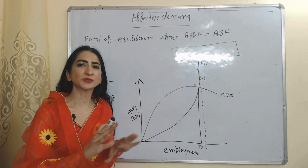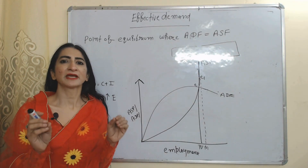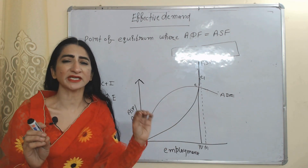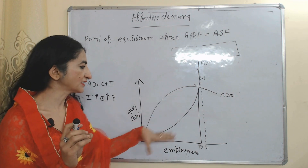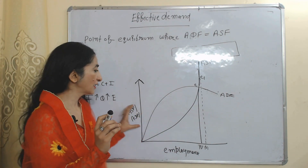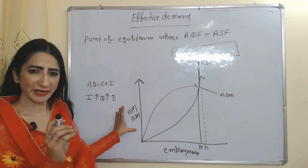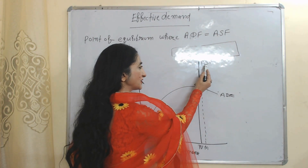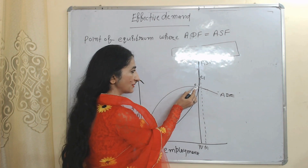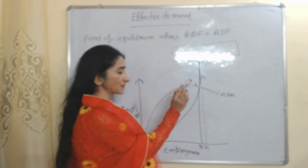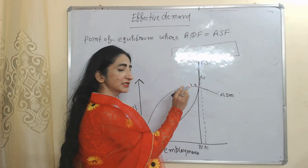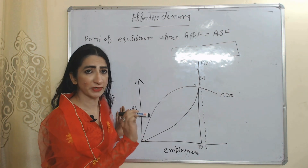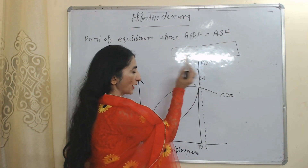The entire theory depends on effective demand, and effective demand is the point of equilibrium where aggregate demand function equals aggregate supply function. In this diagram, on the X-axis we have employment and on the Y-axis we have aggregate supply price and aggregate demand price. ADF is the aggregate demand function and ASF is the aggregate supply function. At point E, ADF equals ASF — that is why E is called the effective demand point, not the full employment point. Full employment point is E1.